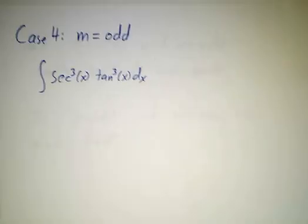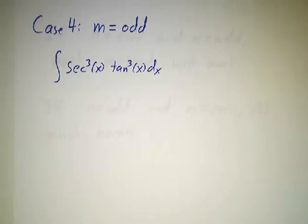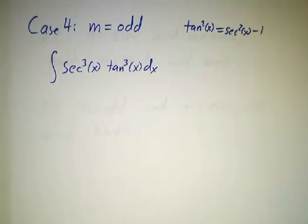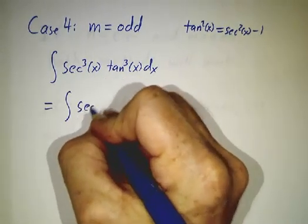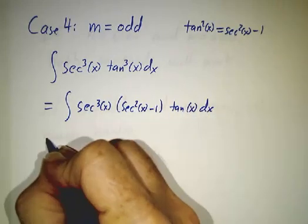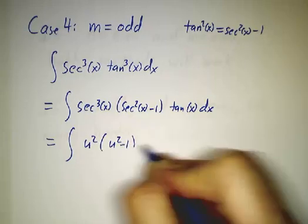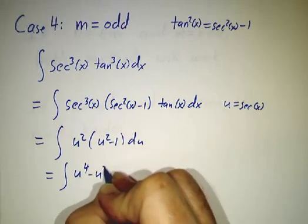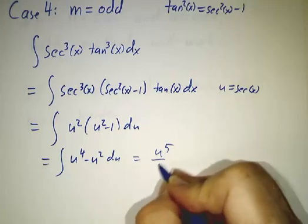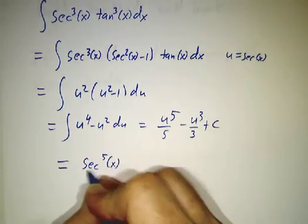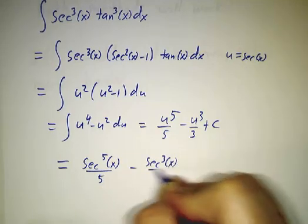The fourth case is when m is odd, like secant cubed tangent cubed. We want to have just one tangent, but we've got three. So we eliminate extras using the identity tangent squared of x equals secant squared of x minus one. Rewrite as the integral of secant cubed of x times secant squared of x minus one times tangent of x dx. With u equals secant of x, this becomes the integral of u squared times u squared minus one du — that's u to the fourth minus u squared du — giving secant to the fifth of x over five minus secant cubed of x over three plus a constant.